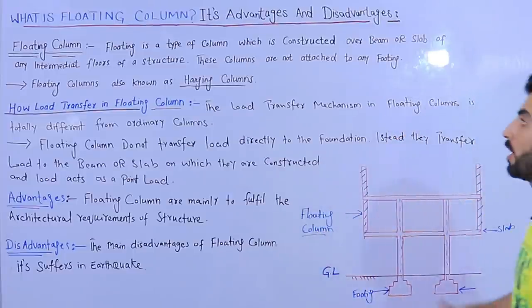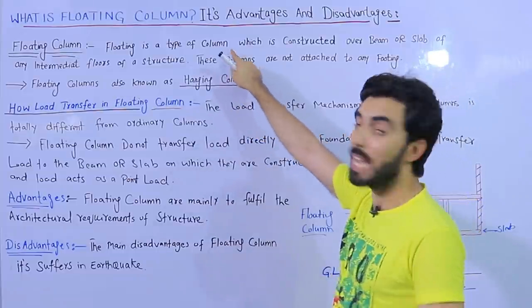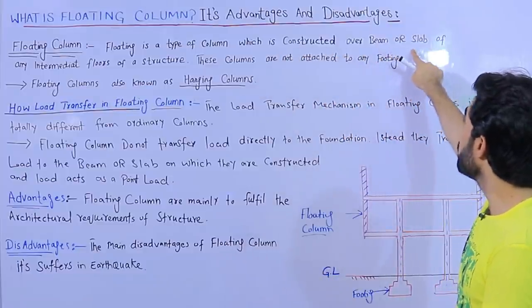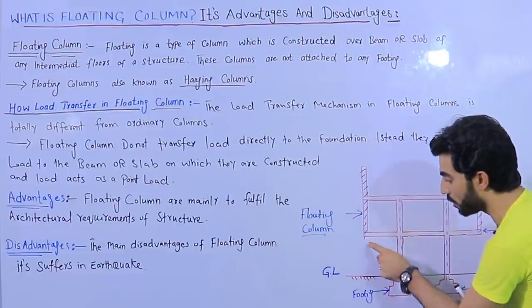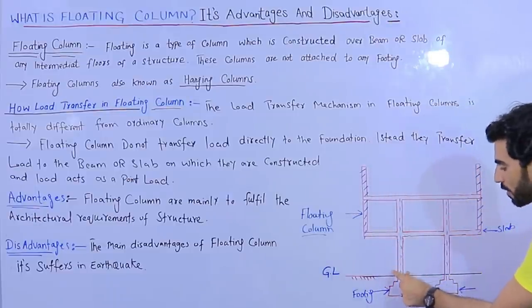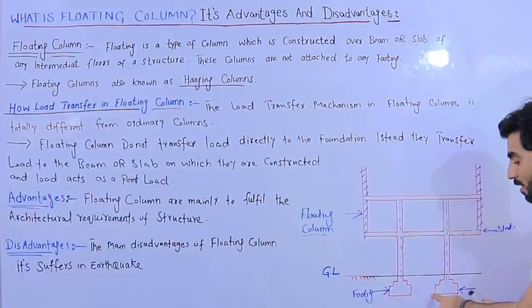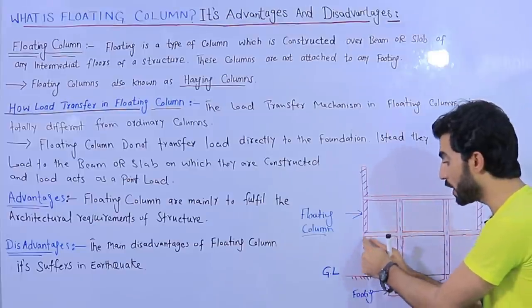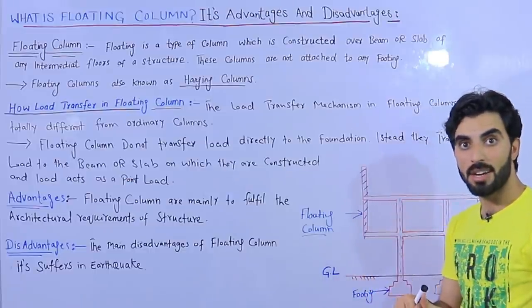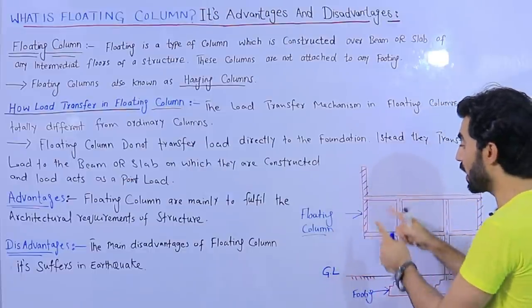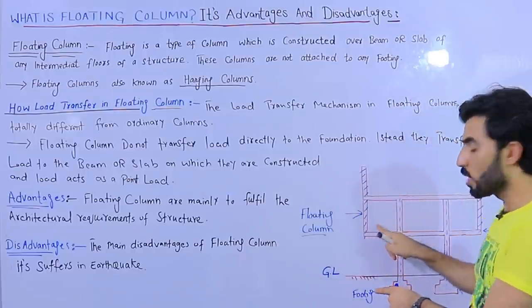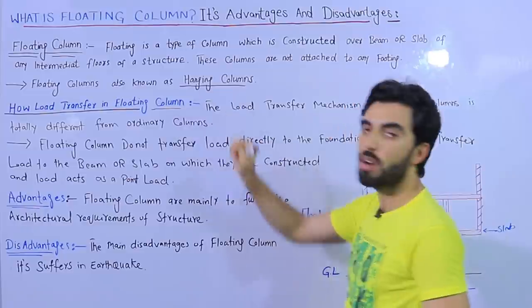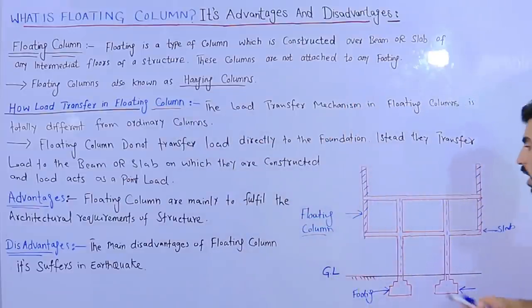The reason is as stated in the definition — a floating column is a type of column constructed over a beam or slab. You cannot see any other support here because the main two columns are present with foundations and footings. But for the floating columns, we don't have any support or column underneath; the column is constructed above the slab. That type of column is called a floating column or hanging column.